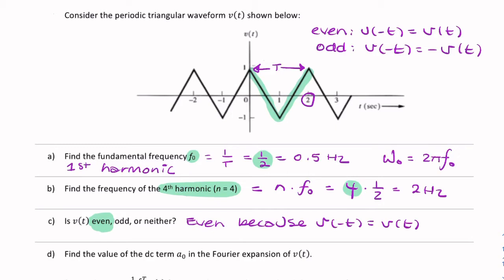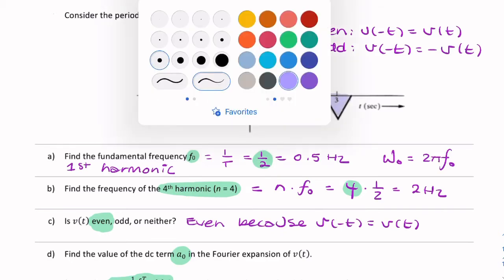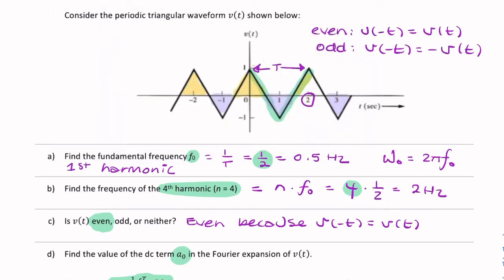Now we're going to calculate the Fourier series expansion terms — the coefficients. Starting with the easiest one: A naught, which is just the DC term. One way to calculate it is by integrating the function, but an easier way for a simple signal like this, which is clearly symmetric about the time axis, is simply to observe that the area below the time axis equals the area above. Because it's a symmetric function, the areas cancel, so we can simply say A naught equals 0.